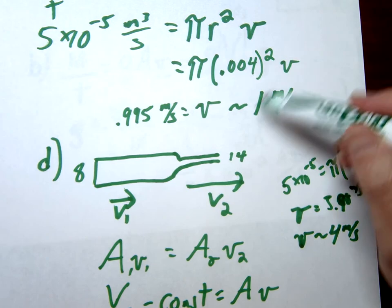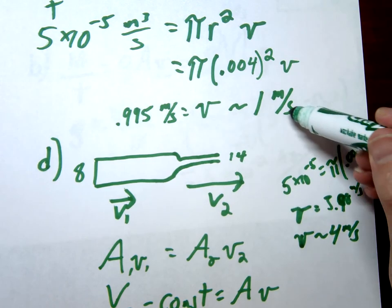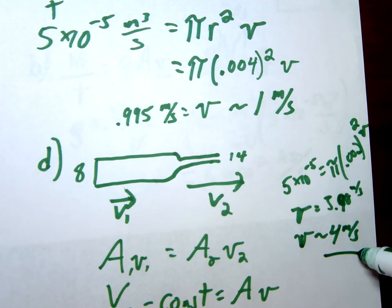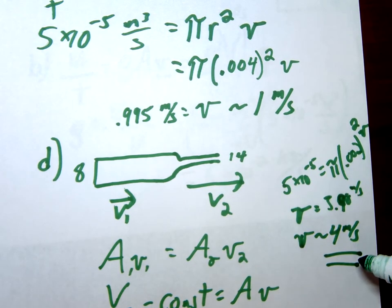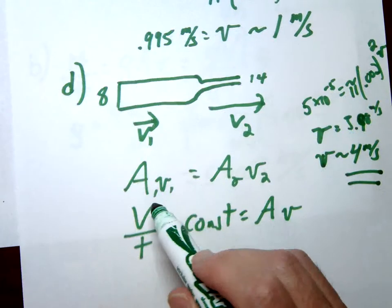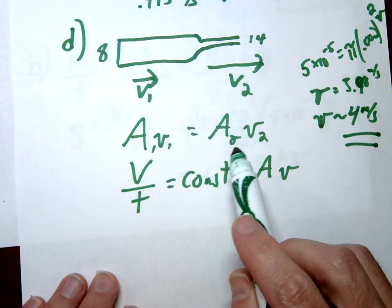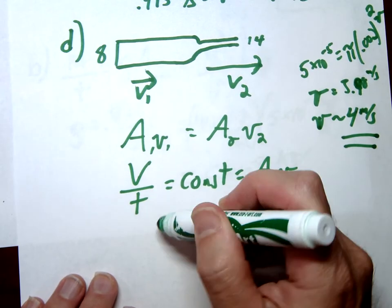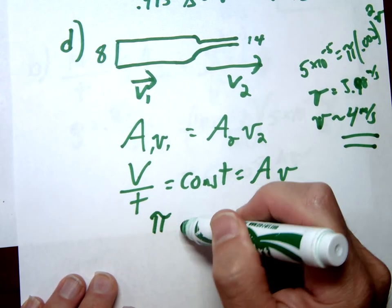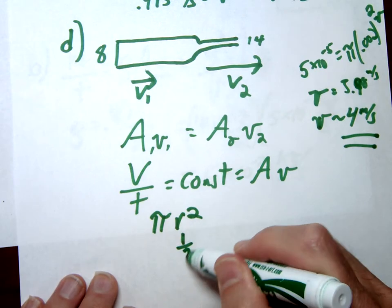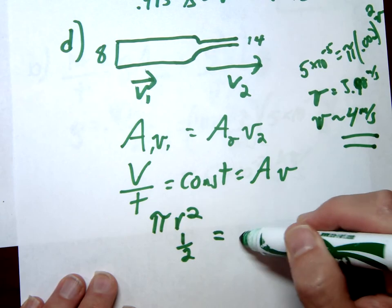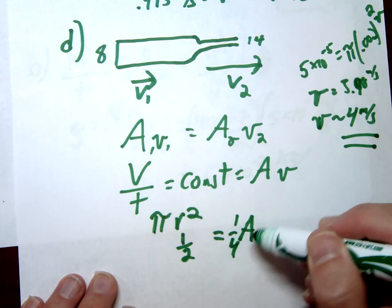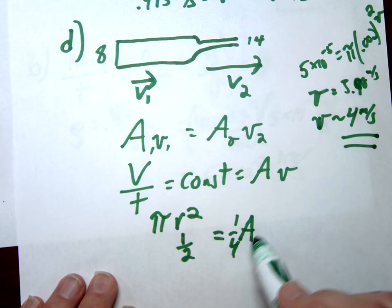So notice what happened here. We cut the diameter in half and we quadrupled the velocity. Well, why did that happen? Again, if we look at this, a1v1 equals a2v2. And since the area is equal to pi r squared, if the radius is cut in half, that means that the area would be 1 fourth. If we cut that radius in half, our area is going to be 1 fourth.